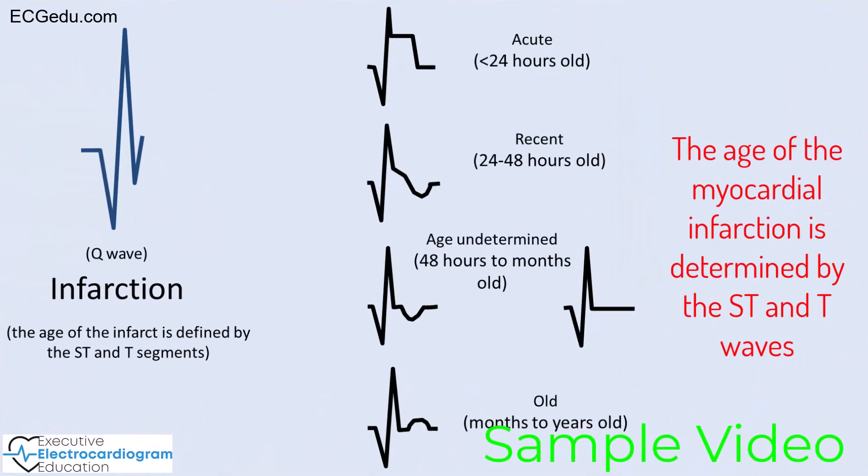Now notice that based on Q waves alone, I did not say whether the myocardial infarction is acute, recent, age undetermined, or old. The timing of the myocardial infarction is estimated by the ST and T waves, and they follow a pattern of evolution based on the age of the myocardial infarction.